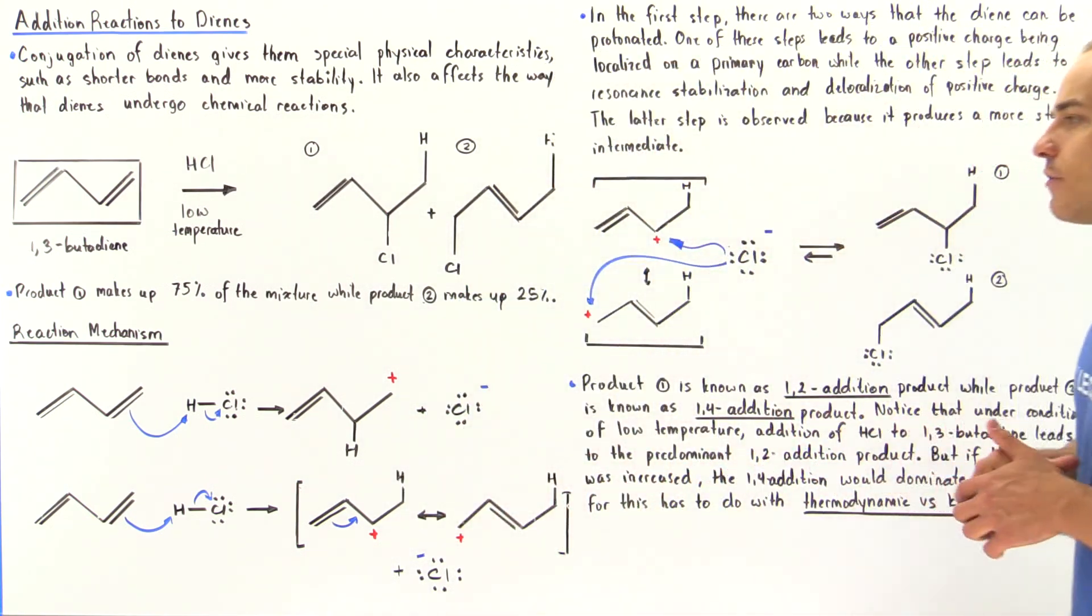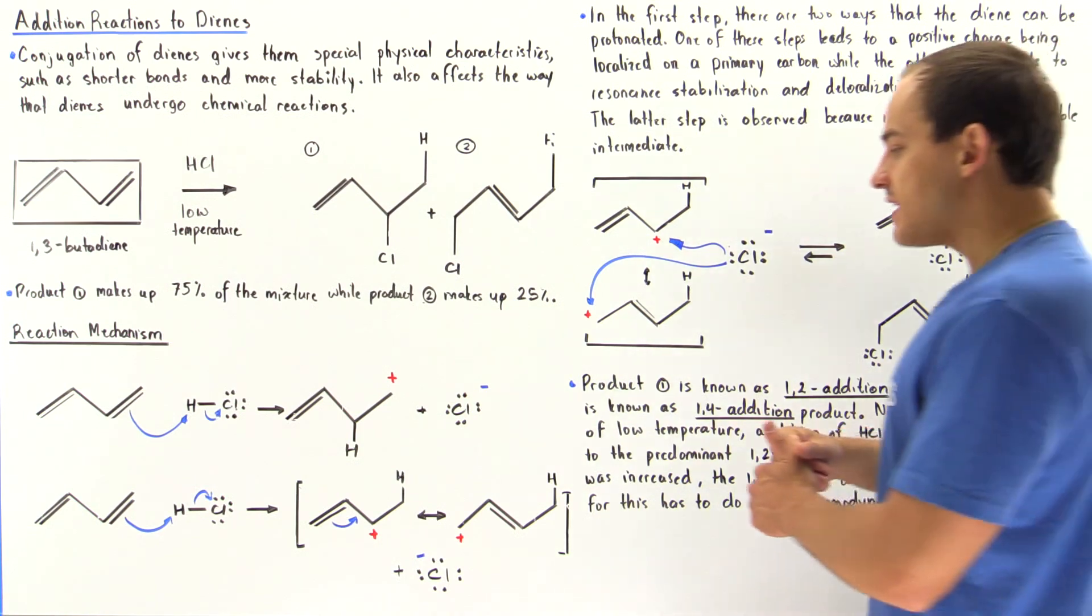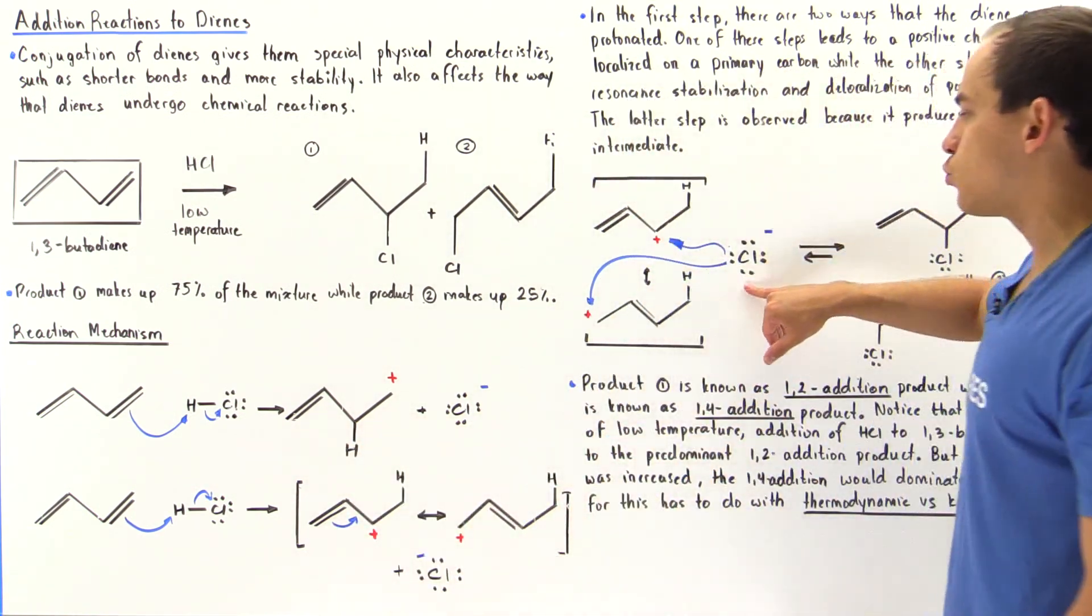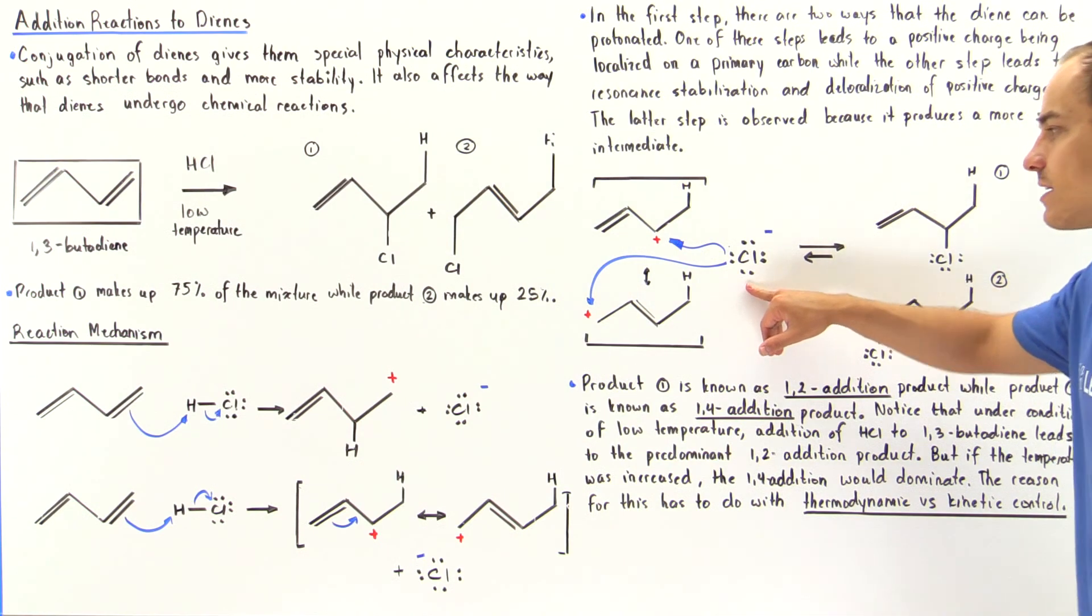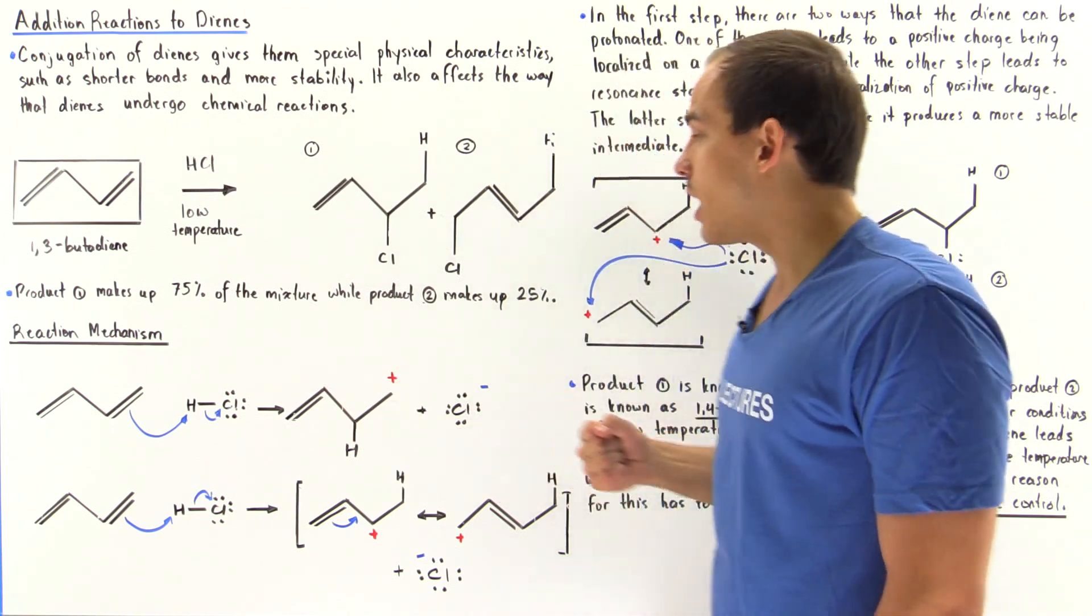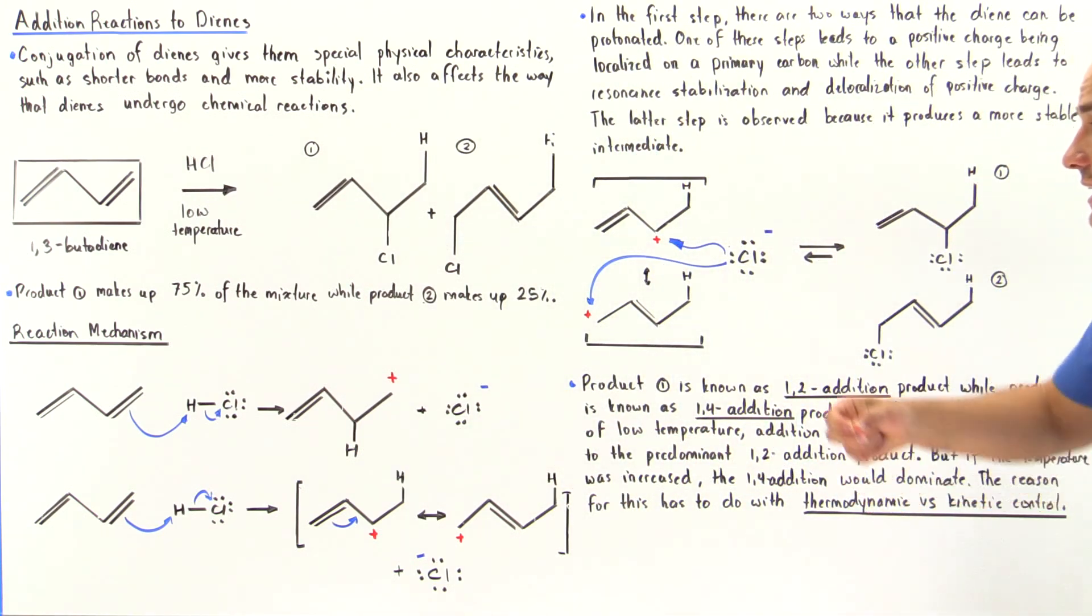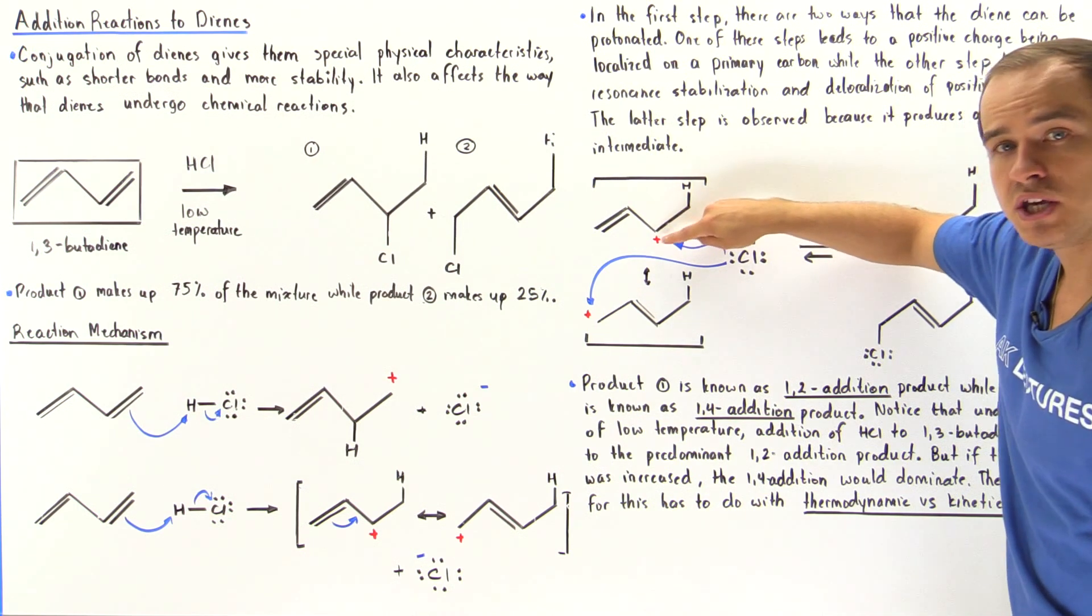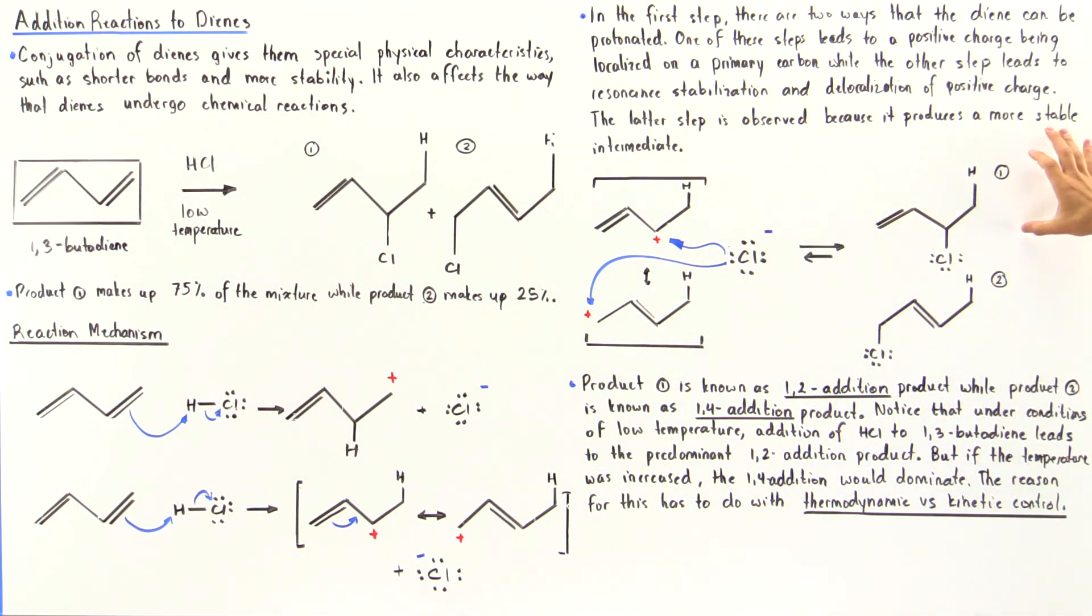What about the second step? Well, in the second step, we basically begin with these intermediates as well as our chloride atom. The chloride atom uses its lone pair of electrons to attack either this positive charge, this empty 2p orbital, in which case it forms product 1.